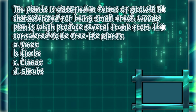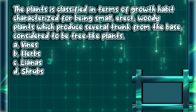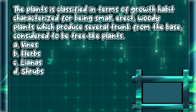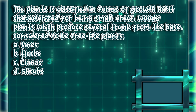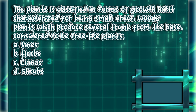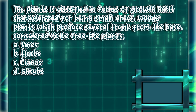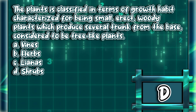The plant is classified in terms of growth habit, characterized for being small, erect, woody plants which produce several trunks from the base, considered to be tree-like plants. A. Vines. B. Herbs. C. Lianas. D. Shrubs. The answer is letter D.